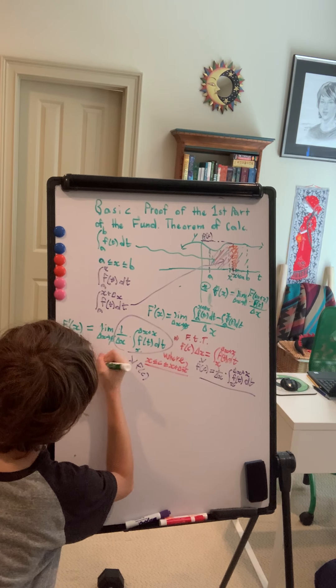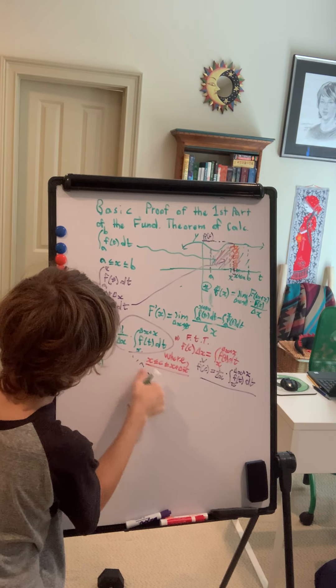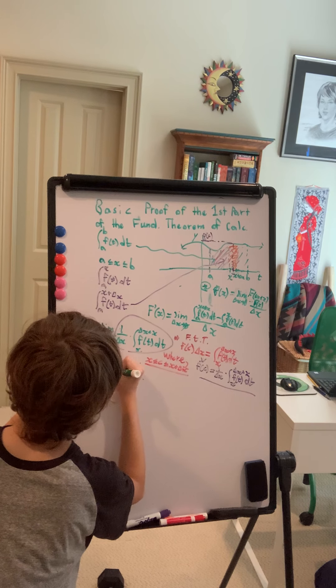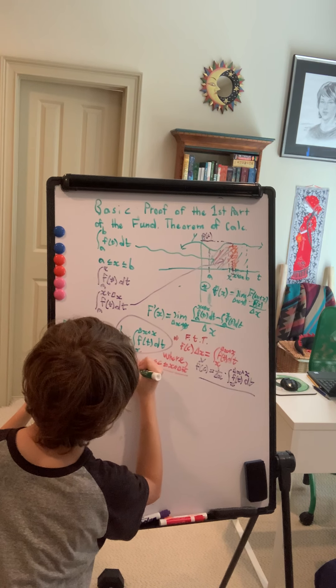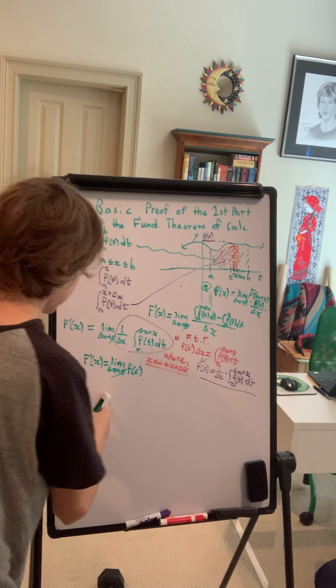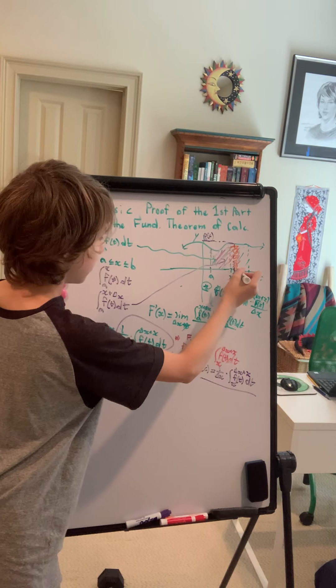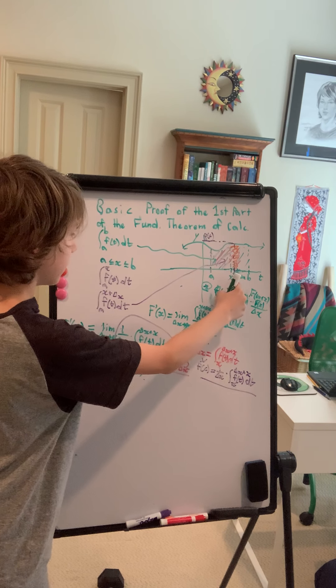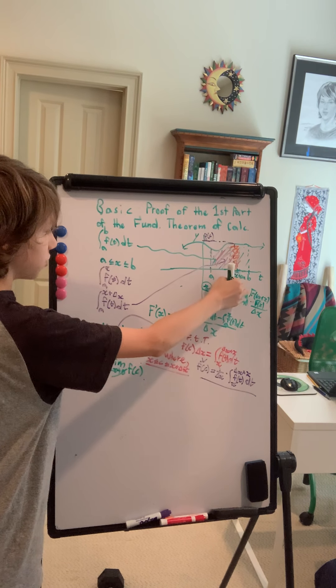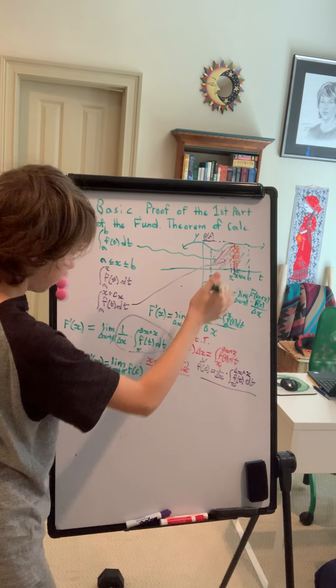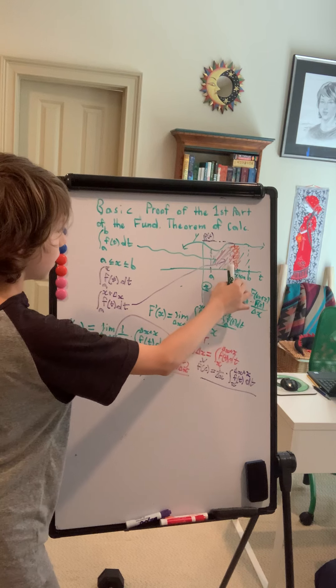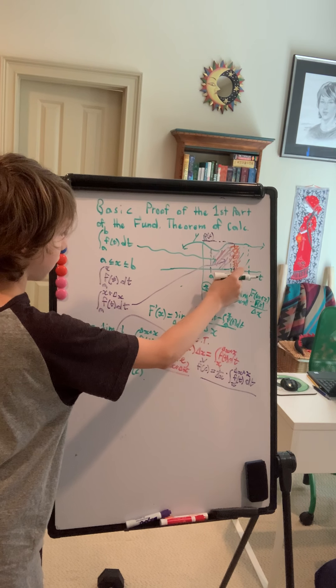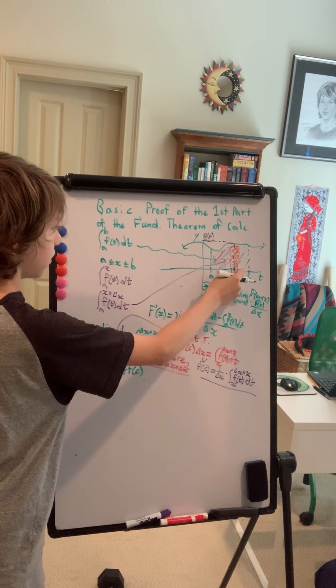So F prime of x, capital F prime of x, is equal to the limit as delta x approaches zero of f of c. Now let's look at this for a second. Well we know that f of c again is somewhere between x and x plus delta x. And let's think about this for a moment, let's just think about c. Well when delta x is gradually getting closer to x, actually if we plug in x for it it just becomes x. Then c will also shrink, and when delta x actually becomes zero, then we'll get to x and therefore c is also going to be equal to x. And if c is equal to x, then f of c equals, or the limit as delta x approaches zero of f of c is actually equal to f of x.